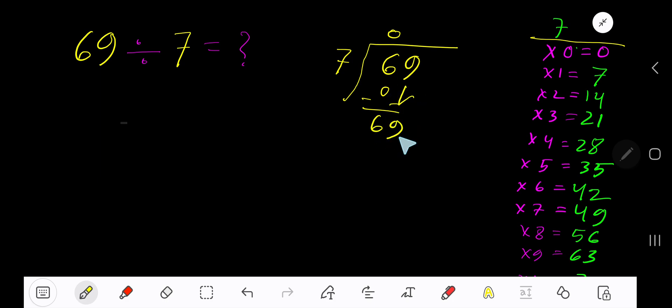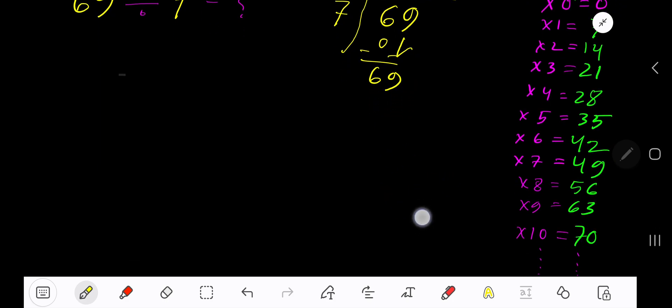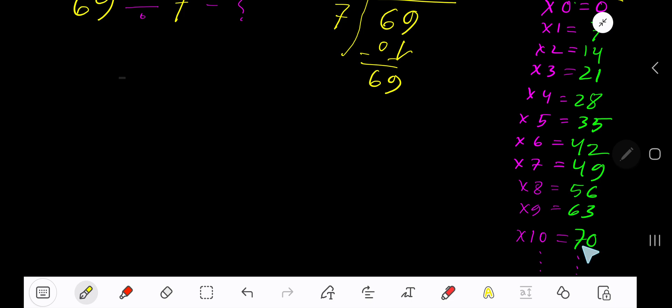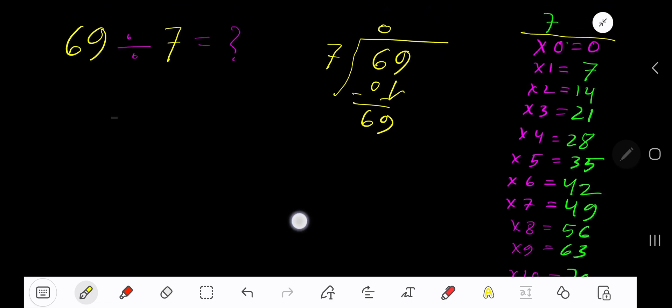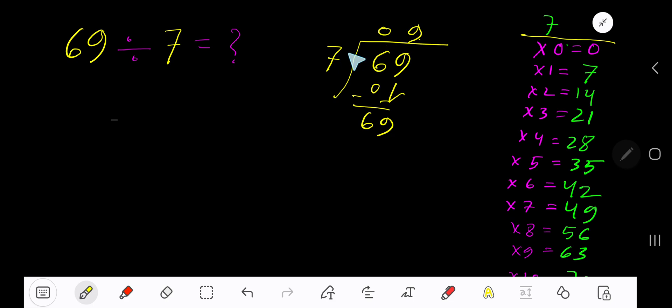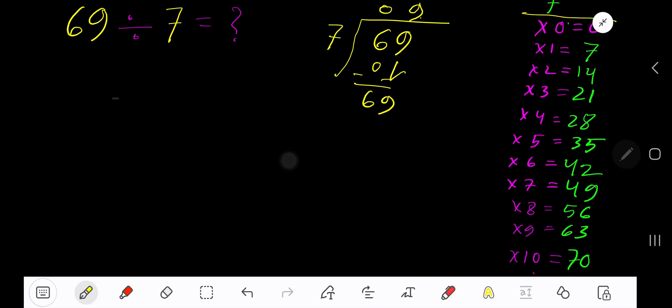69. 7 goes into 69 how many times? 10 times is 70, which is greater, so 9 times. 9 times 7 gives you 63. Subtract, you are getting 6 here.